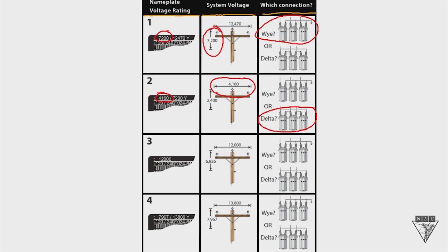The third example: we've only got one number on our nameplate — 12,000 volts. If it's one number, it's going to be a phase-to-phase connection. To get 12,000 volts, it's phase-to-phase, which is a delta connection. In our last example, we focus on the smaller number: 7,967 volts. In order to get that voltage, we have to do a phase-to-ground connection, and that's a Y connection.